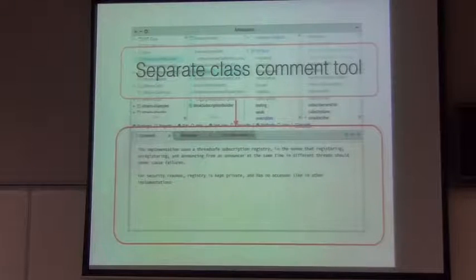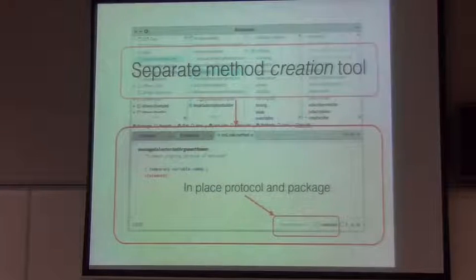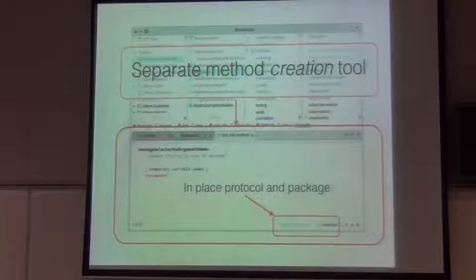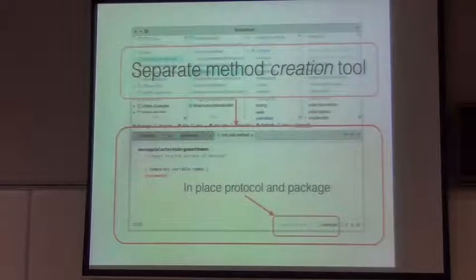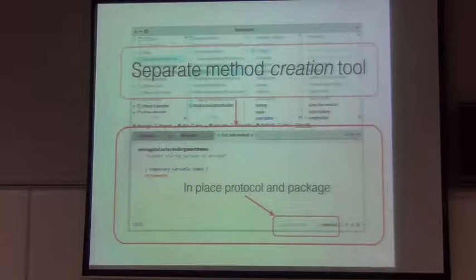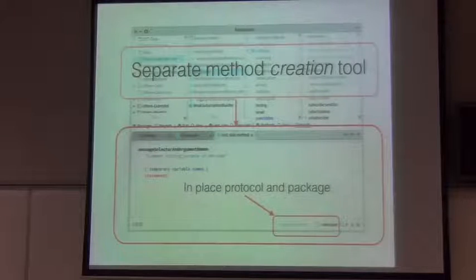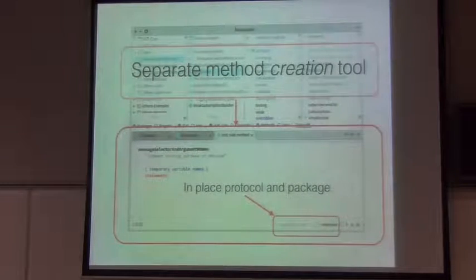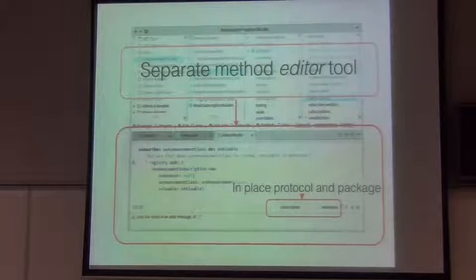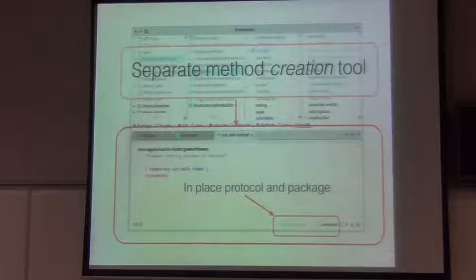There is a separate class comment tool. There is also a separate method creation tool, which I think is very nice for newcomers, because when a user first looks at the browser, there was no clear feedback on how to create a new method. Here it is explicitly shown with a plus button inside the method panel. If you click the plus on the class side, it creates a class-side method. You can immediately start creating a new method without first creating protocols — the tool includes an in-place protocol editor, so you just type the name and the protocol is created when you accept changes. It also allows you to create a new package extension by pressing a checkbox and selecting the package.